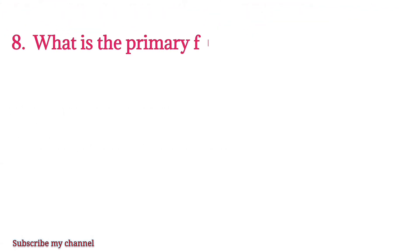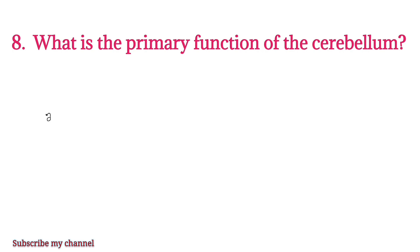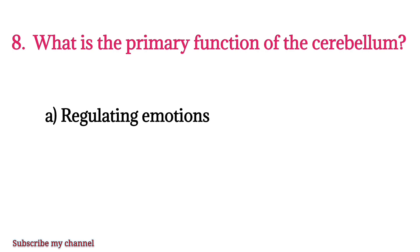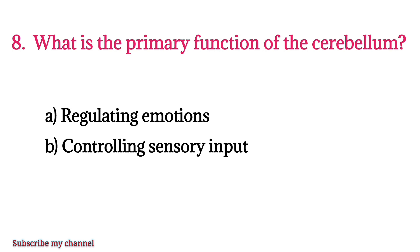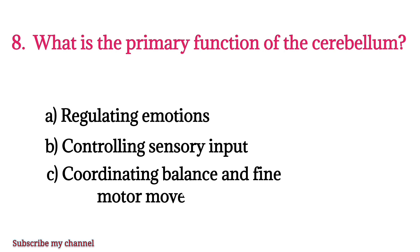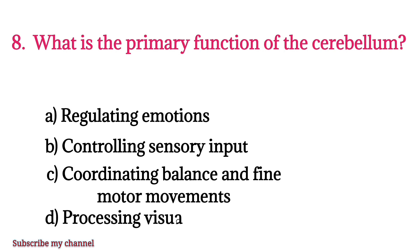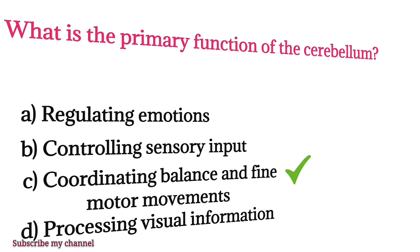MCQ number eight: What is the primary function of the cerebrum? Option A: regulating emotions, option B: controlling sensory input, option C: coordinating balance and fine motor movements, option D: processing visual information. The right option is option C.